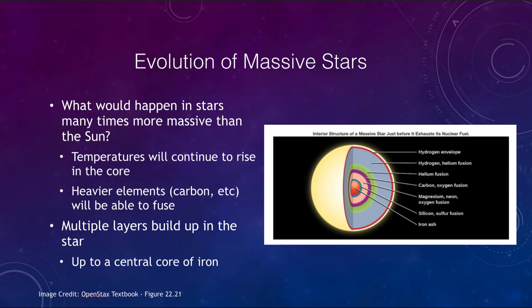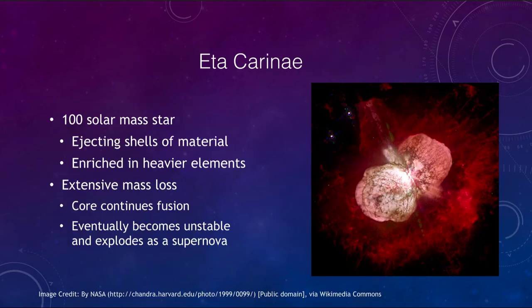So let's look at an example, the star Eta Carinae. This is an example of a very massive star right at the limit of 100 solar masses, about as massive as a star can possibly be. It is ejecting material out into space, and that material is enriched in heavier elements. So this is going through all of those stages right now and building up heavier elements in its core.